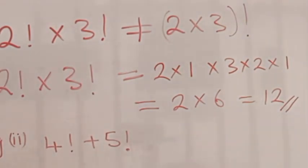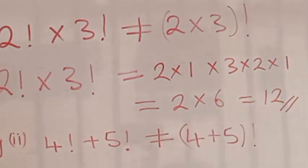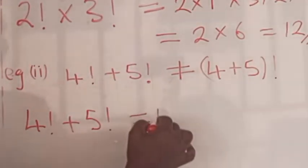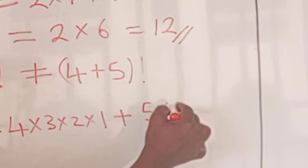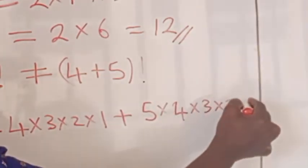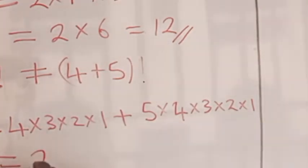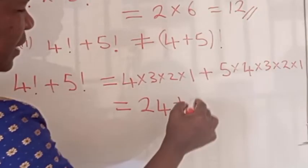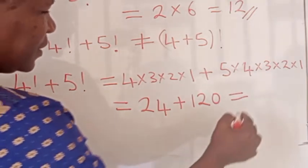Next, compute four factorial plus five factorial. Observe that it is not equal to four plus five factorial. It equals four times three times two times one, plus five times four times three times two times one. This is equal to 24 plus 120, which gives us 144.